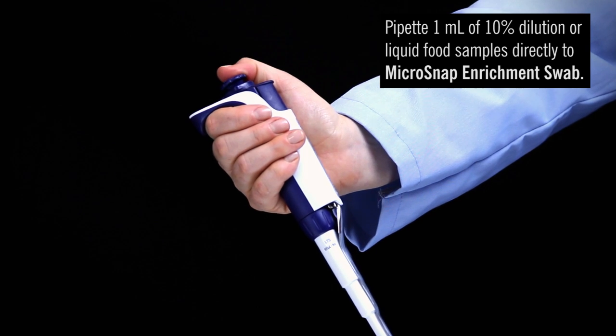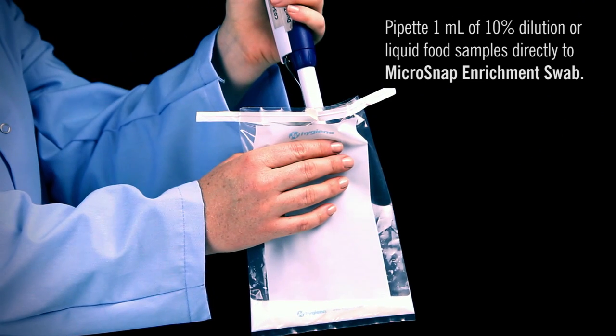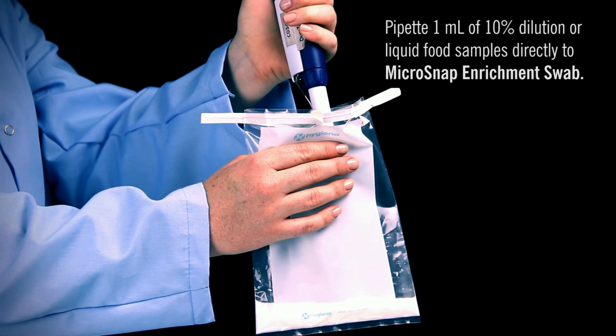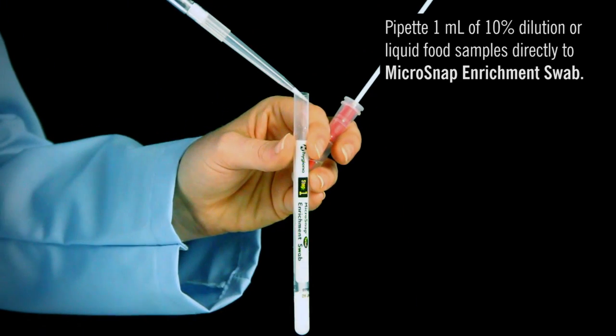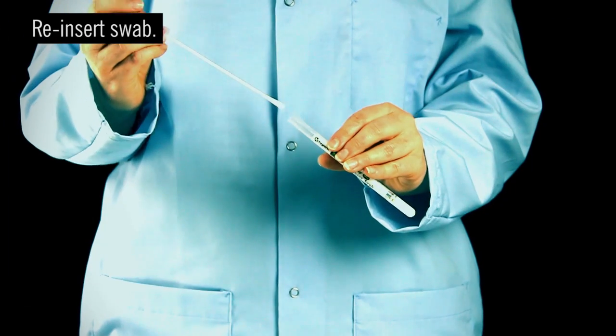For product samples, you may prepare a 10% dilution or add 1 ml of liquid food samples directly to the enrichment device. Replace the swab in the tube.